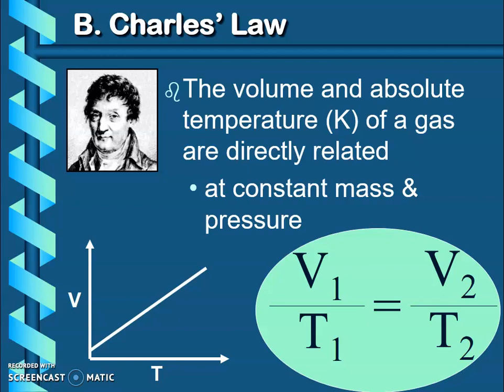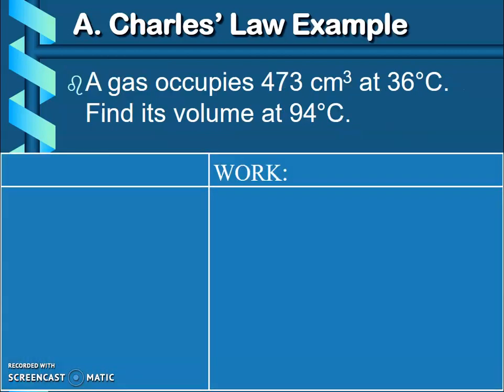Let's do a practice problem and let's see what this is going to look like. A gas occupies 473 centimeters cubed at 36 degrees Celsius. Find its volume at 94 degrees Celsius. Let's analyze this and see what information we have. We have a volume: 473 centimeters cubed.